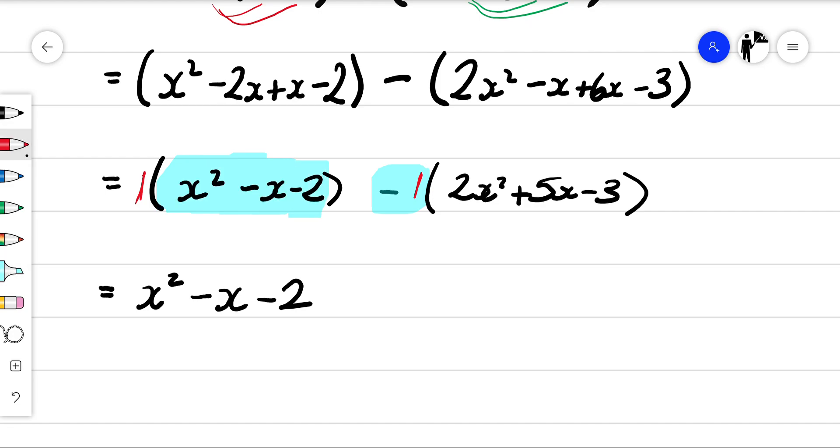But then over here, we've got minus 1 lot of this bracket. So if we were to multiply this out, minus 1 times 2x squared is minus 2x squared. Minus 1 times plus 5x is minus 5x. Minus 1 times minus 3 is plus 3.